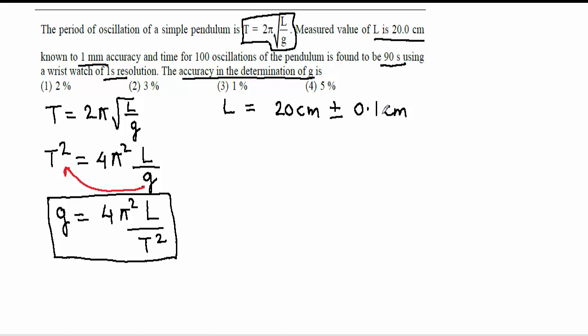If value is given in centimeter, then error also should be in centimeter. Time is given 90 seconds plus minus, and accuracy or resolution given is 1 second. So now we will use the formula of error in g.